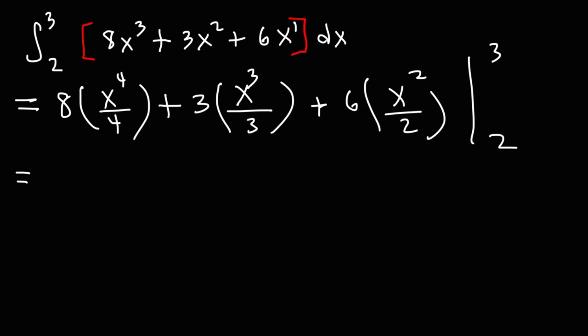So now let's simplify this expression. 8 divided by 4 is 2. So we have 2 times x to the fourth. 3 divided by 3 is 1. So that cancels. So we have 1x cubed which we can write as just x cubed. 6 divided by 2 is 3. So then this is going to be plus 3x squared evaluated from 2 to 3.